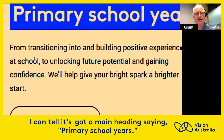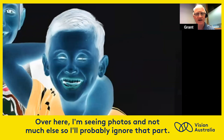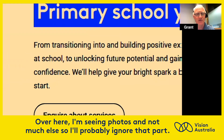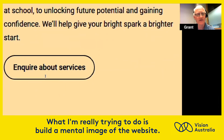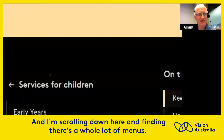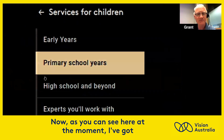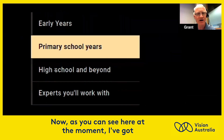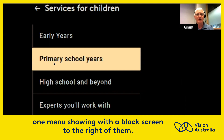I can tell it's got a main heading saying 'Primary School Years.' Over here I'm seeing photos and not much else, so I'll probably ignore that part. What I'm really trying to do is build a mental image of the website. I can see there's a button there for 'More Services,' and scrolling down I'm finding there's a whole lot of menus. I've got one menu showing with a black screen to the right of them.